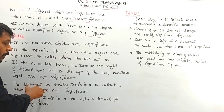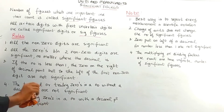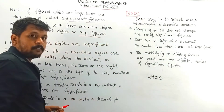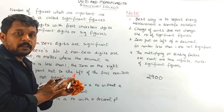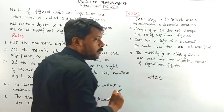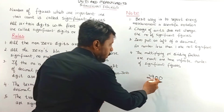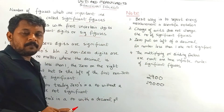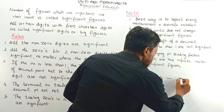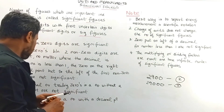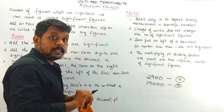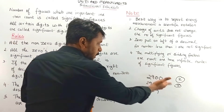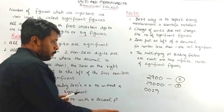The fourth rule: trailing zeros in a number without a decimal point are not significant. For example, 29000 — the trailing zeros placed after the non-zero numbers are not significant, because the zeros only represent the positional value of 9. So the number of significant figures in 29000 is 2. Also, leading zeros are not significant either.